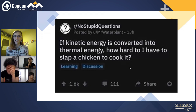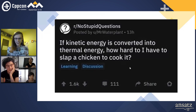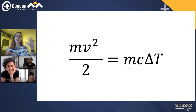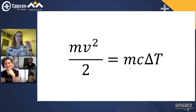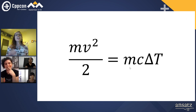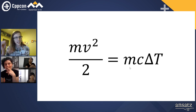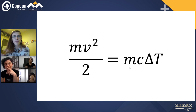I'm going to use a soy-based chicken alternative in this talk, but it'll be essentially the same thing. On the left we have kinetic energy, which is mass times velocity squared over two. On the right we have thermal energy, which is mass times specific heat capacity times the change in temperature.